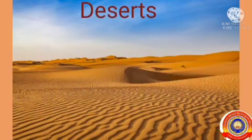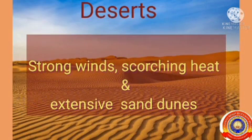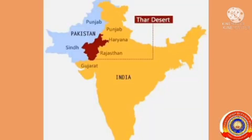Strong winds, scorching heat, and extensive sand dunes are the characteristic features of deserts in India. A major part of the state of Rajasthan, situated to the northwest of India, is a desert. This region, known as the Thar Desert, is sparsely inhabited and the least cultivated due to the scarcity of rain.